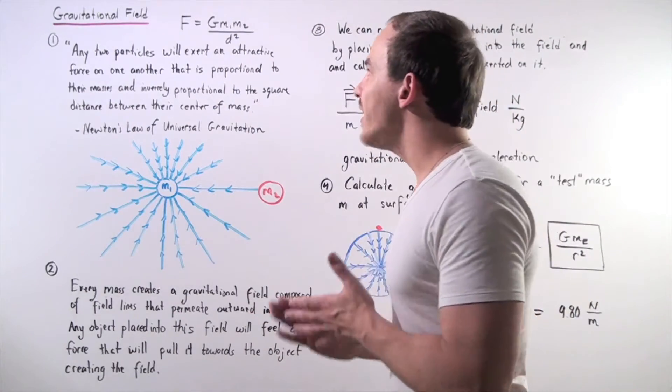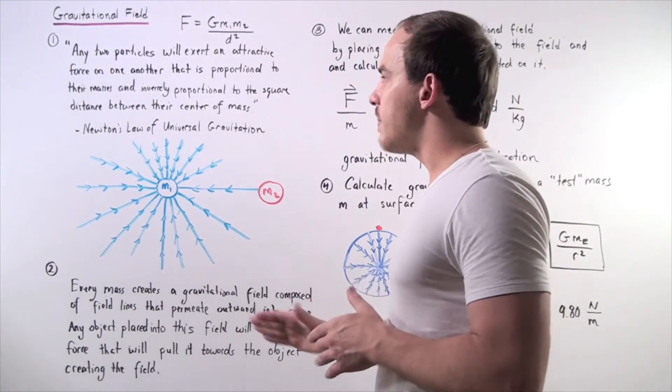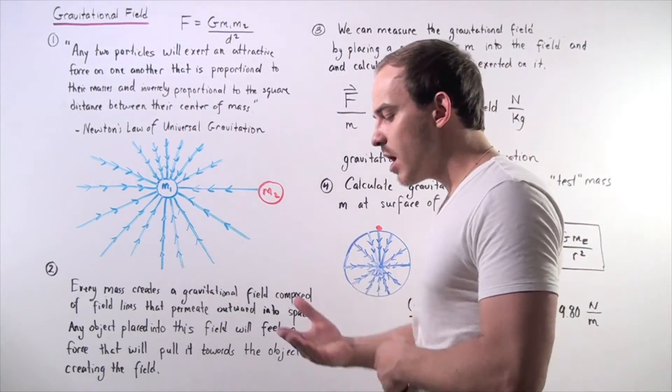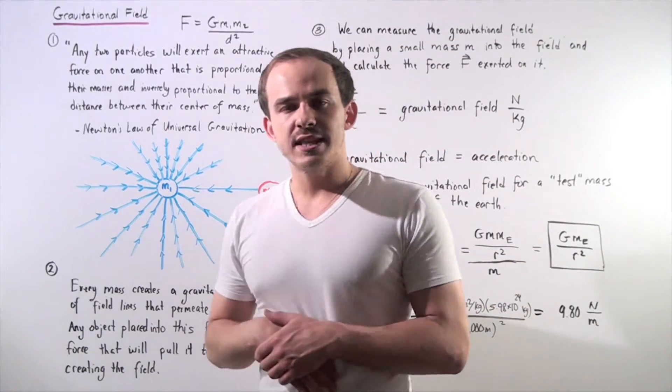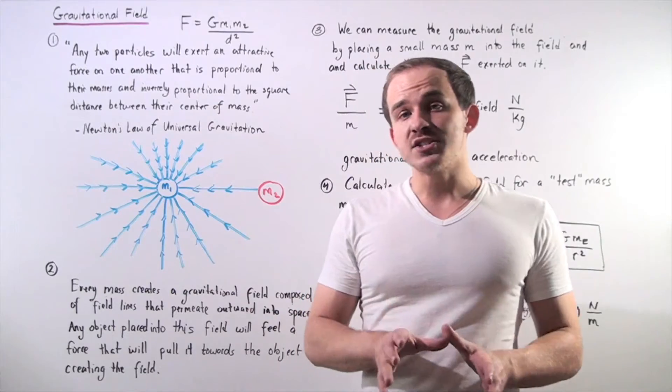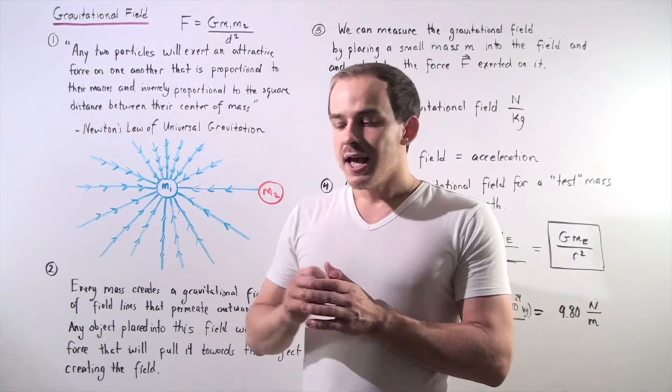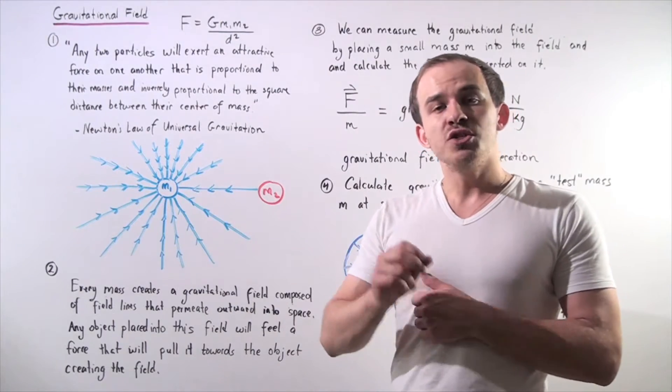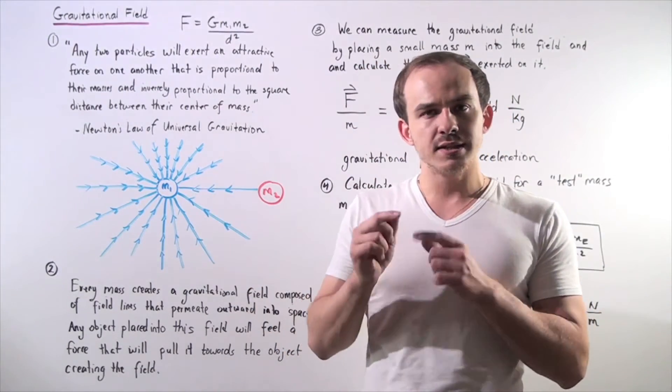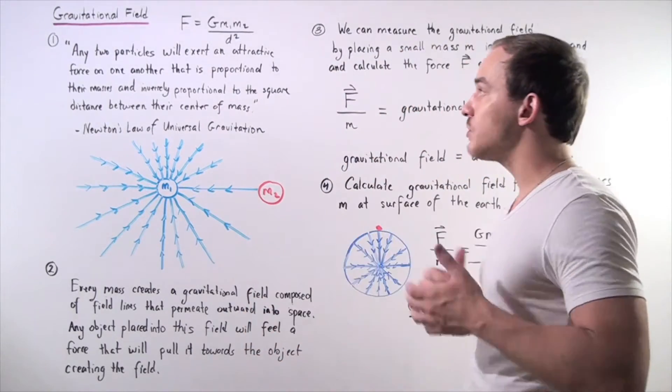So before we get into what exactly a gravitational field is, let's talk about Newton's Law of Universal Gravitation. It can be summarized in the following statement: any two particles that have mass will exert an attractive force on one another that is proportional to their masses and inversely proportional to the square of the distance between the center of mass of our two particles, our two objects.